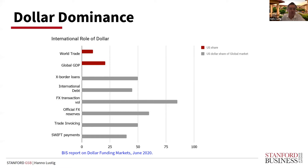The gray bars show the importance of the dollar as a share of the global market, both in terms of cross-border loans, international debt, volume of FX transactions, official reserves, trade invoicing, and SWIFT payments. What you see is that the dollar plays an extremely important role that is disproportionate even to the size of the U.S. economy — that's what you get from comparing the gray bars to the red bars.